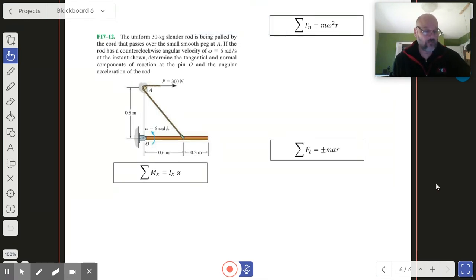Alright, this is the last one in section 4 of chapter 17, and it's not that bad. We got a rod here - the rod is already rotating, so it's got an omega equal to 6 at the time that we're looking at it. Our job is to try and figure out what's happening with the axle at O and what is the angular acceleration of the rod.